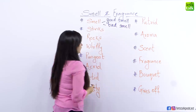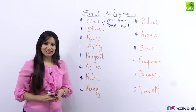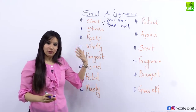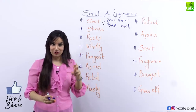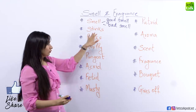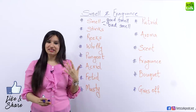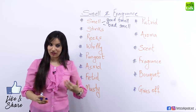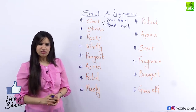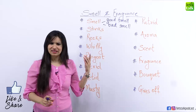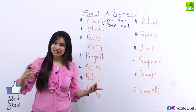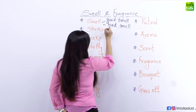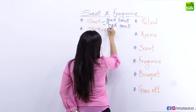Let's look at the next word: 'stinks'. Stinks also means going ahead with the bad side of the word smell. Something that stinks smells very unpleasant and not so nice. So you could say the kitchen stinks, meaning the kitchen is stinking. Here the word 'stinks' is a verb — it smells bad.